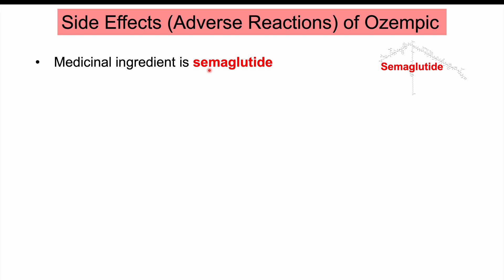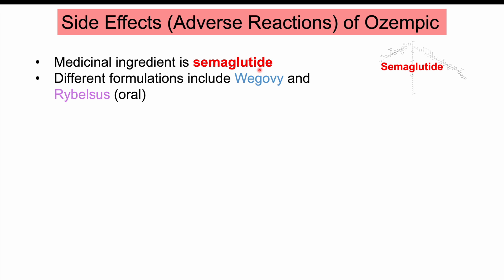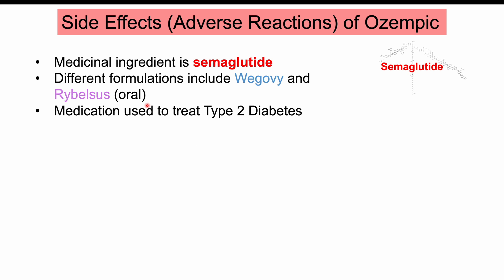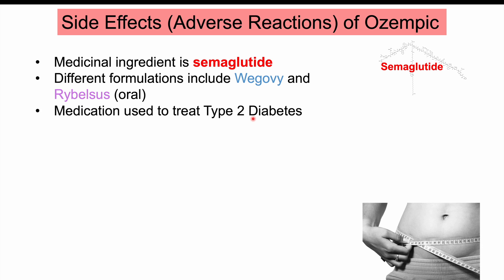Ozempic is a brand name for the medicinal ingredient known as semaglutide. Semaglutide comes in several formulations: Ozempic, Wegovy, and Rybelsus — all semaglutide, but in different formulations and dosing. Ozempic is an injectable used primarily to treat type 2 diabetes. Wegovy is also an injectable, used more specifically for weight loss, and occurs at higher doses. Rybelsus is an oral formulation taken by mouth.